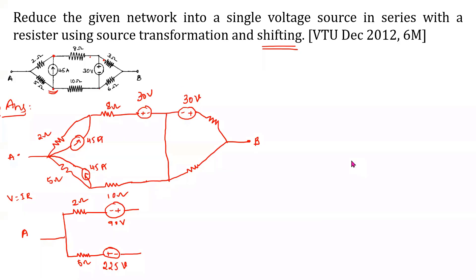Regarding the voltage shift process: the 30 volt source cannot have source transformation applied directly because no resistors are in series or parallel with it. At this node the voltage is 30 volts, and at this node it is minus 30 volts. The negative terminals of the two voltage sources are shorted at this point. So using Ohm's law: 45 × 2 = 90 volts in series with 2 ohm resistance, and 45 × 5 = 225 volts in series with 5 ohm resistance. The 8 ohm resistance is kept as it is.